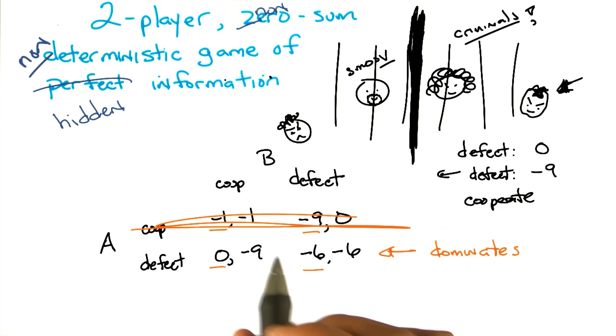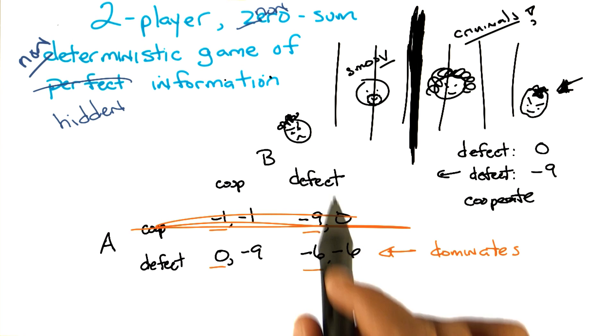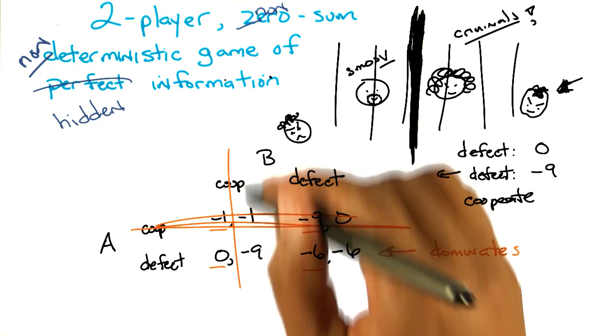By exactly the same argument, minus 1 versus 0, minus 9 versus minus 6. Defecting is always better. B will never cooperate.